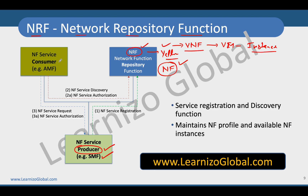The other type is called a service consumer, which typically consumes some kind of services. Producers are the ones providing the services, consumers are the ones consuming the services. Any network function can work as both a network function producer and a network service consumer.